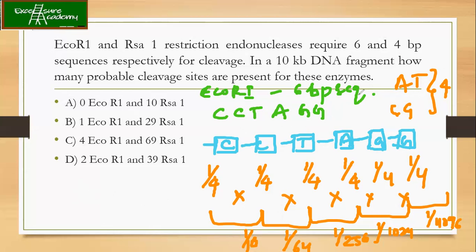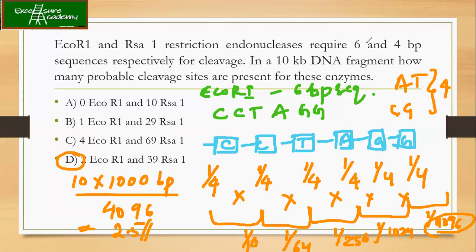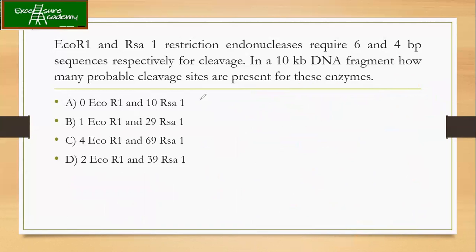Now the question is in a 10 kilobase pair DNA fragment, how many probable cleavage sites will be present? What you're going to do next is take 10 kilobase pair divided by the total number, which is 4096. So you are getting around 2.5 something. We see that this might be the option. Now let's see for Rsa1 also.